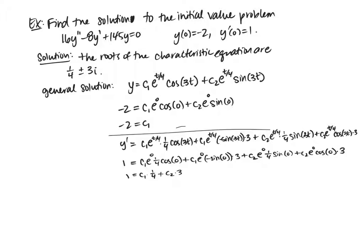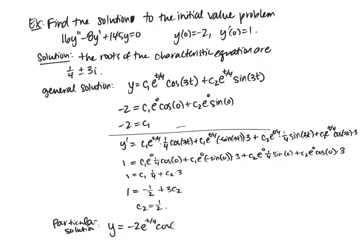Since c1 is negative 2, we get 1 equals negative one-half plus 3c2, which gives c2 equals one-half. So I've solved for both constants, and the particular solution is y equals negative 2 e to the t over 4 cosine 3t plus one-half e to the t over 4 sine 3t.